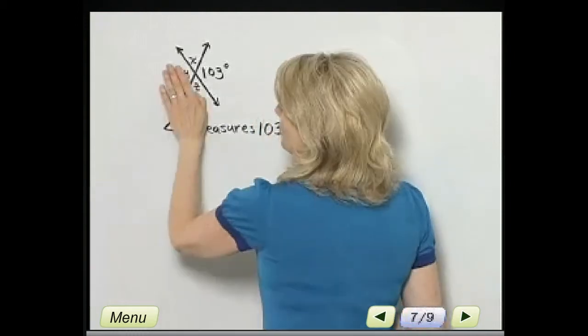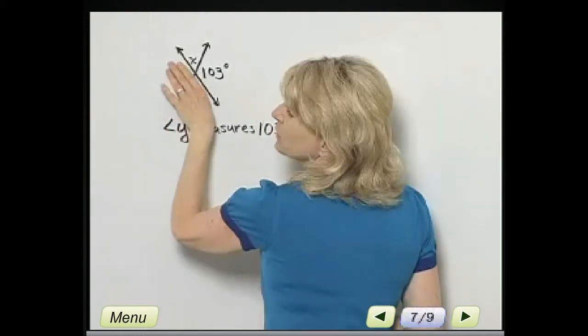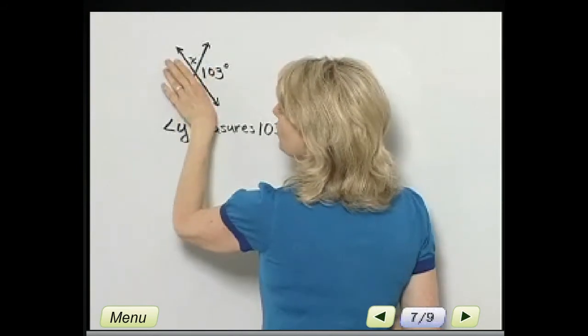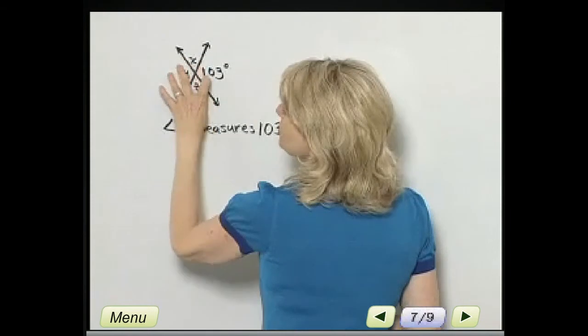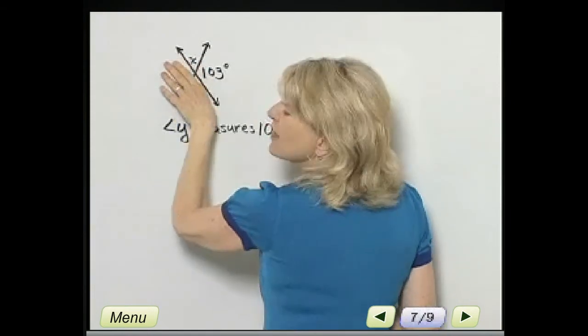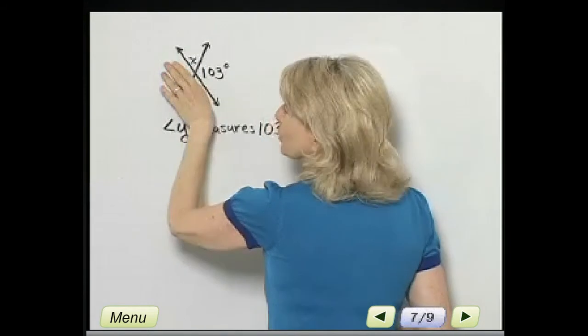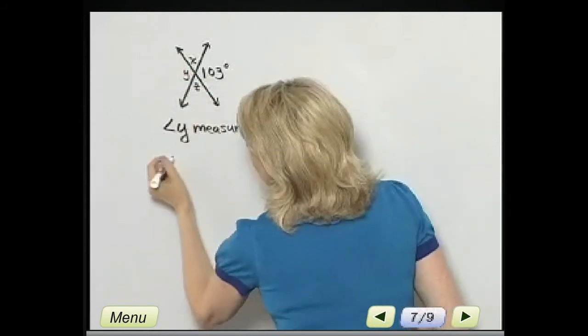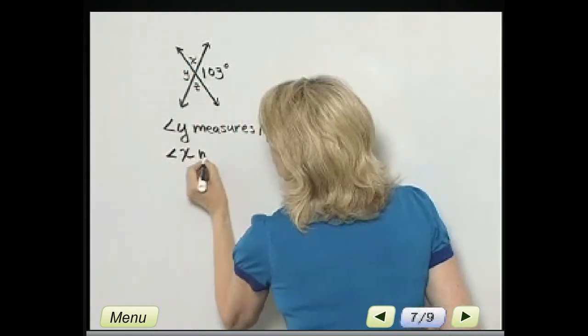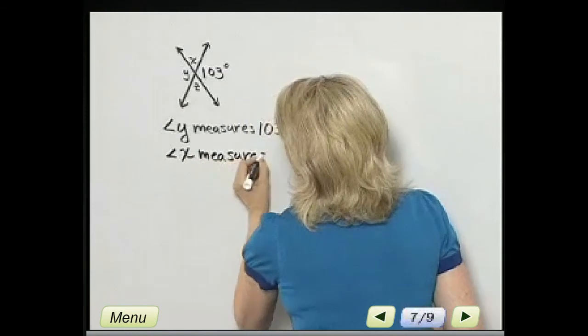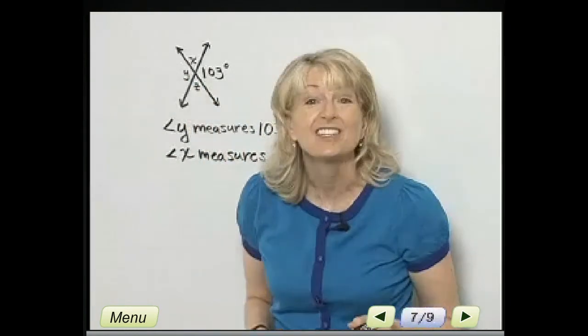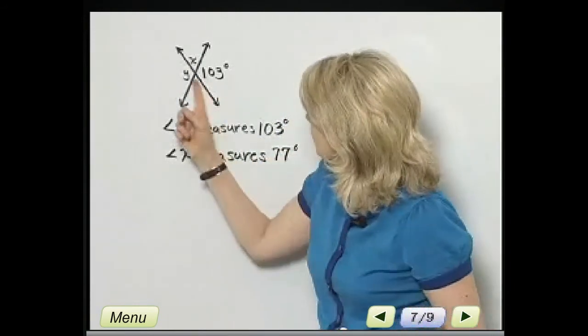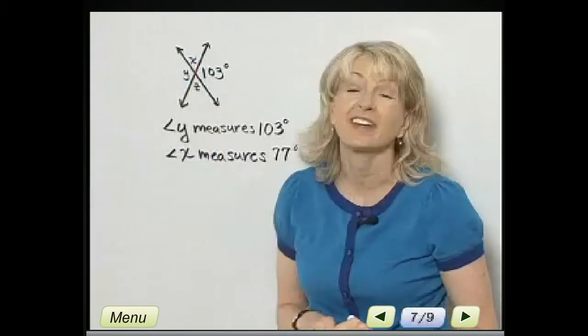But it is true, for example, if you just concentrate on the 103 degree angle and angle X, notice a straight angle is formed, so I know the measure of angle X plus the measure of 103 degrees, that must equal 180 degrees. Because a straight angle measures 180 degrees. Because of that, angle X measures 180 degrees minus 103 degrees, so it measures 77 degrees. Because 77 plus 103 is 180.